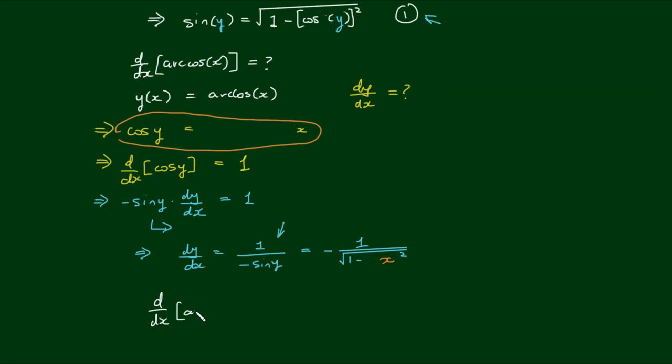So finally we have the answer that the derivative of arccos(x) is equal to 1 divided by the square root of 1 minus x².